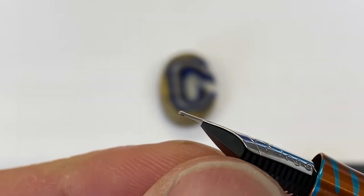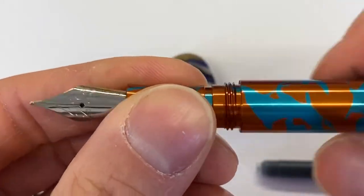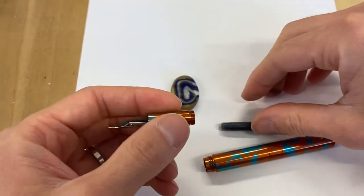And the nib right there, no ink there. There's no ink in the fins and there is no ink in the barrel of the pen. So let's install an ink cartridge and let's talk about how we get this thing started.